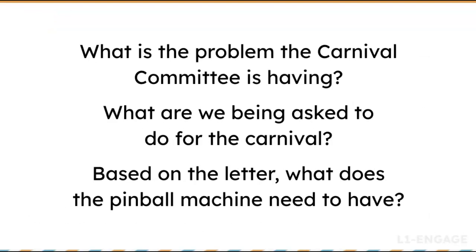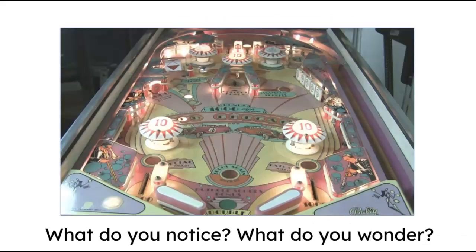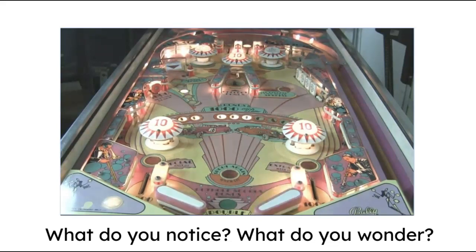You'll then ask students questions about the problem the carnival committee is having and what students are being asked to do. You'll pair students up to brainstorm and ask what they need to know about pinball in order to make a pinball machine with at least one trick. You'll then play a pinball video and allow students to turn and talk to discuss their observations. As students are sharing their observations and questions, you'll provide them with the sentence stem, 'Now I am wondering about...' to model how we can use observations to develop questions.